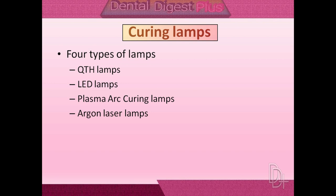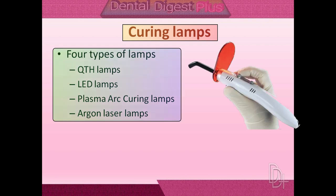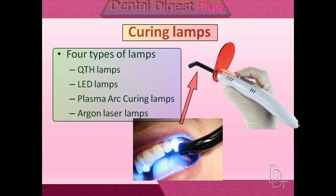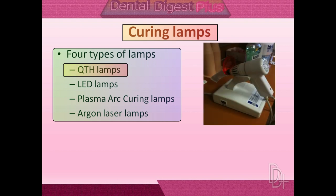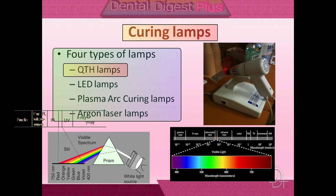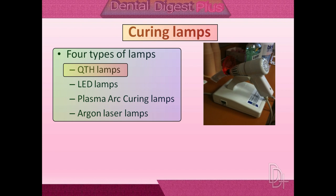Before moving on to the classification of dental composite, let's look at the curing lamps used for light cure activation. Most curing lamps are handheld devices containing a light source equipped with a relatively short and rigid light guide made of fused optical fibers, which directs light to the specific point where curing is needed. Four types of lamps may be used: First, QTH lamps have a quartz bulb with a tungsten filament that irradiates both UV and white light. This must be filtered to remove heat and all wavelengths except those in the violet-blue range. The intensity of the bulb diminishes with use, so a calibration meter is required to measure output intensity.